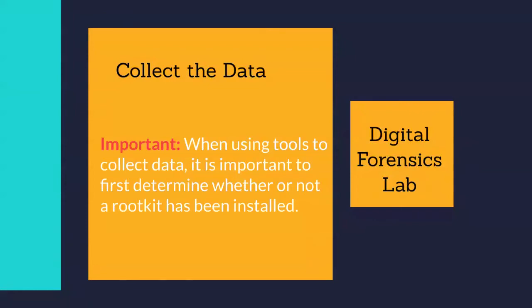When acquiring data over a network, you need to consider the type of data to be collected and the amount of effort to use. Consider what data you need to obtain that would support the prosecution of the offending parties. For example, it might be necessary to acquire data from several computers through different network connections, or it might be sufficient to copy a logical volume from just one computer.